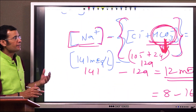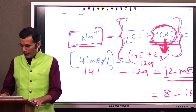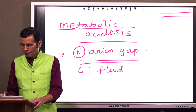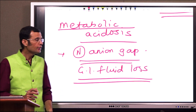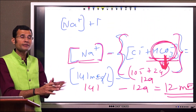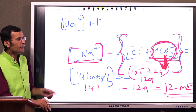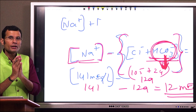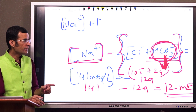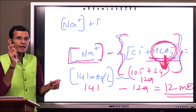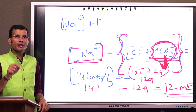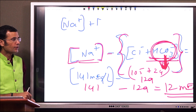Why does the anion gap remain normal in some acidosis conditions? For example, in the case of GI fluid loss, if acidosis has occurred because of GI fluid loss, the anion gap remains normal. This is because in those acidosis conditions in which the anion of the acid is chloride, the anion gap will remain normal; otherwise, it will increase.